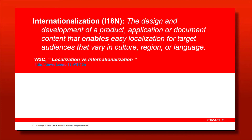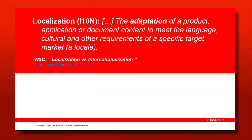The first concept is internationalization itself. In the words of the World Wide Web Consortium, internationalization is the design and development of a product, application, or document content that enables easy localization for target audiences that vary in culture, region, or language. The keyword here is localization. Localization, once again in the words of the W3C, is the adaptation of a product, application, or document to meet the language, cultural, and other requirements of a specific target market. You can call the bundle of the language, cultural, and other requirements a locale. So basically, as you can see, internationalization and by extension localization are not just about translating text strings.